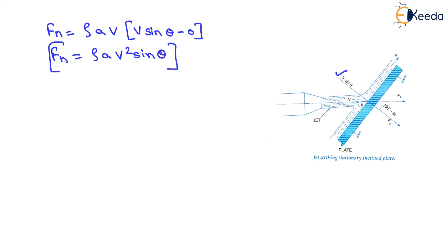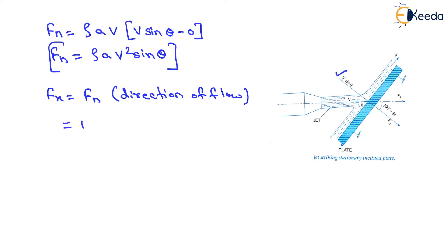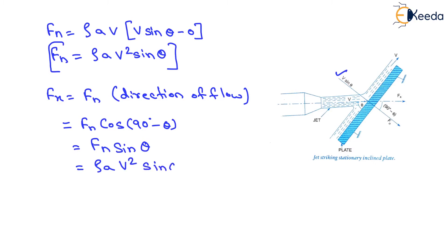This force can be resolved into two components: one in the direction of the jet and the other perpendicular to the direction of flow. So Fx, the component of Fn in the direction of flow, equals Fn into cos(90 degrees minus theta), which equals Fn sin theta. Substituting the value of Fn, Fx equals rho A V squared sin squared theta.